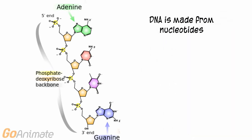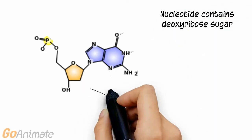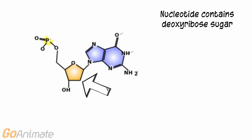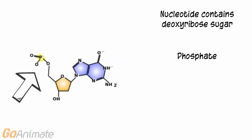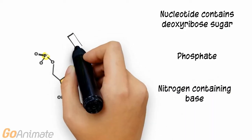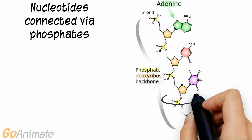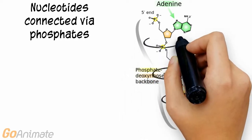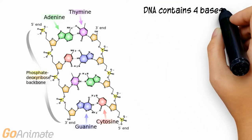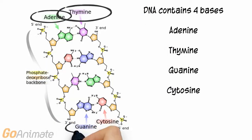DNA is made from smaller units called nucleotides. Each nucleotide has three main parts: it contains a deoxyribose sugar, a phosphate, and a nitrogen-containing base. The nucleotides are connected together via the phosphates. DNA contains four bases: adenine, thymine, guanine, and cytosine.